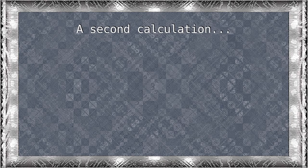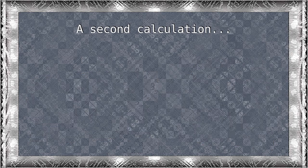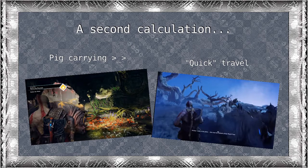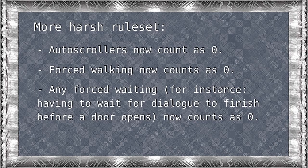However, you could argue that the aforementioned rules were somewhat lenient on the new God of War. For instance, long auto-scroller sections were counted as limited interactivity, even though there's basically nothing you can do to speed them up. So, just out of curiosity, I calculated this stuff a second time with a less charitable interpretation of what is downtime and what is not. I set all the auto-scrolling sections as well as forced walking or other types of forced waiting around the game as 0 instead of 1 — as complete passivity instead of merely limited interactivity. So, how did the results look like now?